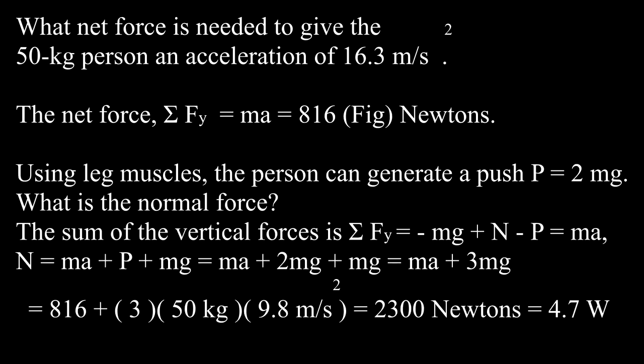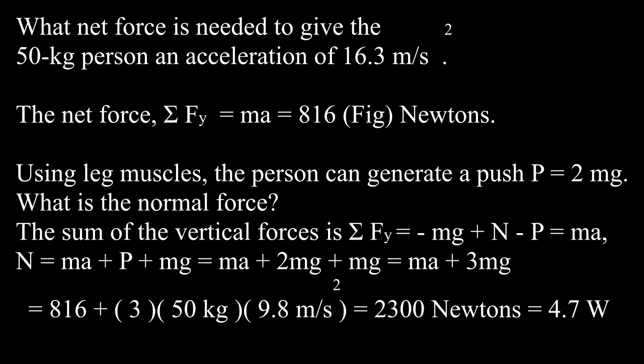What net force is needed to give the 50 kilogram person an acceleration of 16.3 meters per second squared? The net force equals Ma equals 50 kilograms times 16.3 meters per second squared equals 816 newtons. Using leg muscles, a person can generate a push of twice the person's weight — that is, P equals 2mg.